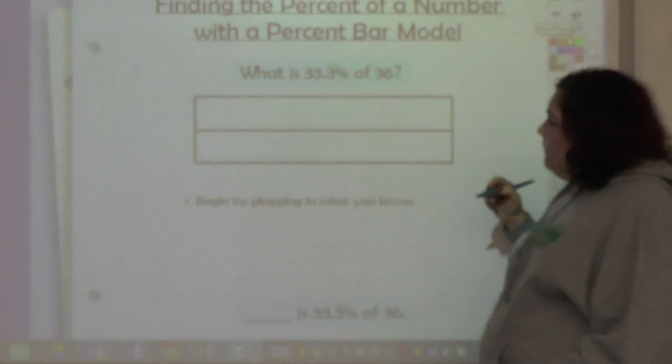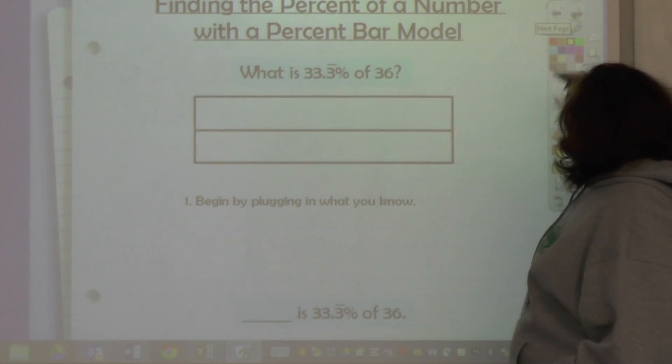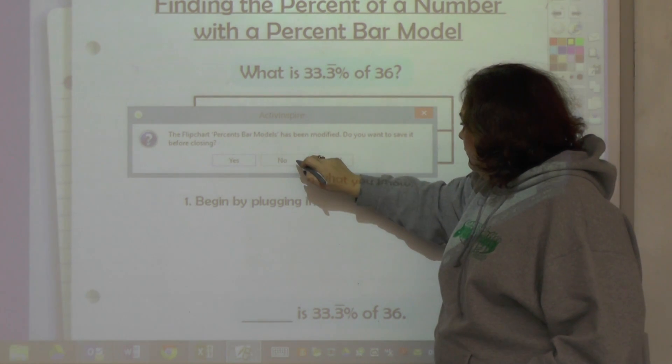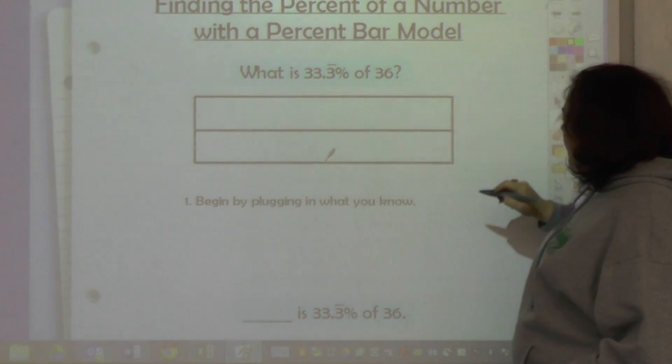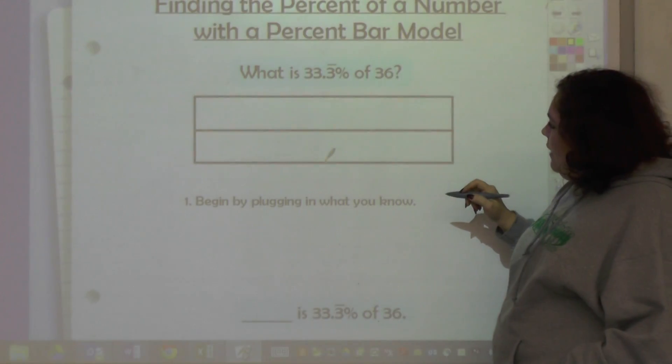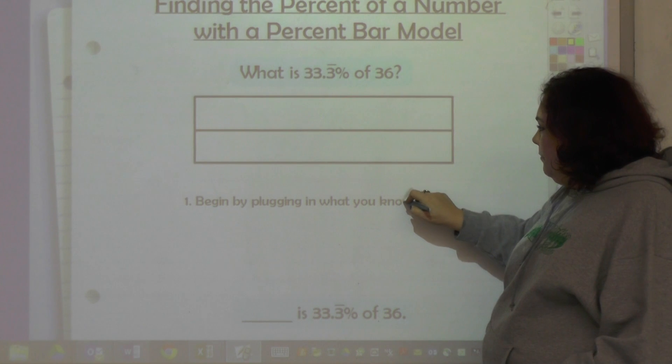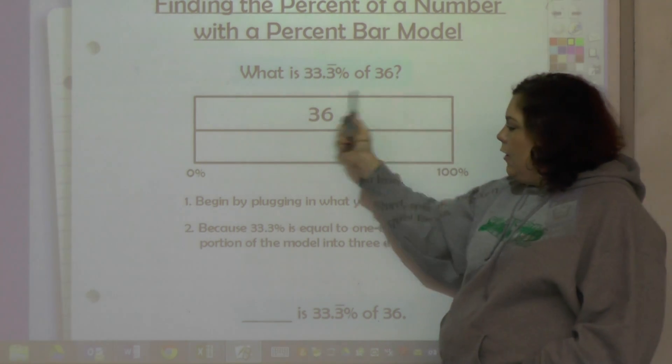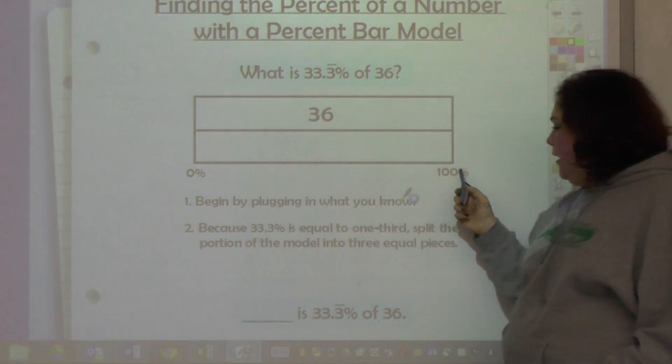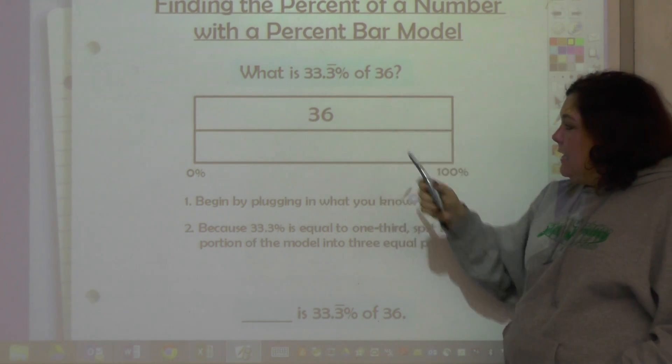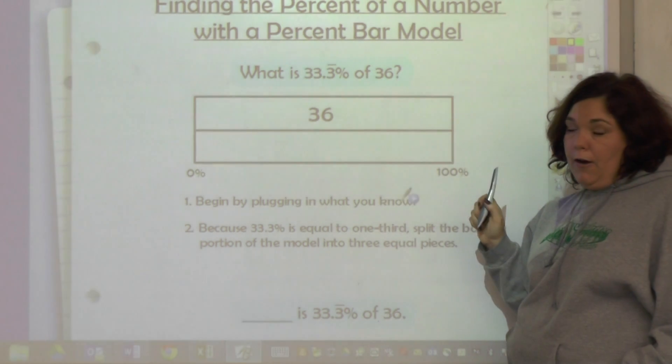So let's do this one - find the percent of a number with 33⅓% of 36. Begin it by plugging in what you know: 36 is the whole, zero to 100, and we know that 33⅓ is a third of the bar. 33⅓ is one-third.